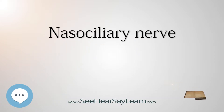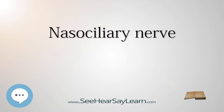The nasociliary nerve is a branch of the ophthalmic nerve, CNV-1, one of three branches of the trigeminal nerve, also known as CNV. It is intermediate in size between the two other main branches of the ophthalmic nerve — the frontal nerve and the lacrimal nerve — and is more deeply placed.